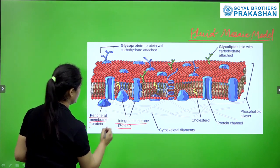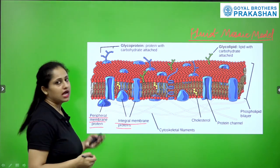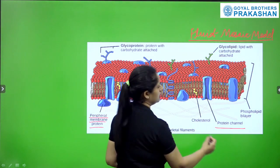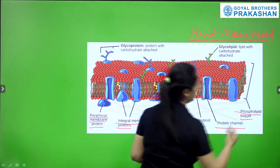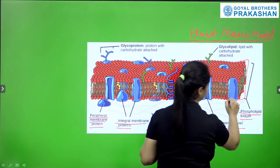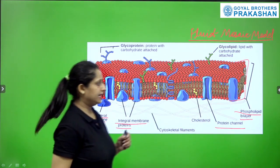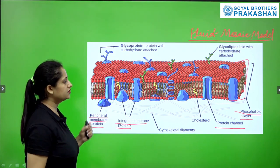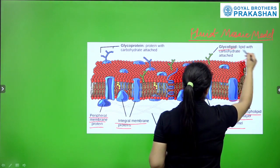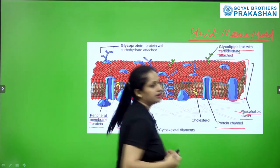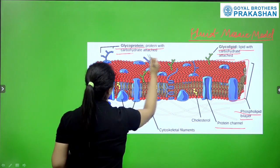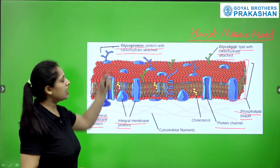Some peripheral membrane proteins are also present, which also help in transportation. Some protein channels are present. A phospholipid bilayer is present — that is, the membrane contains phospholipids, which means phosphorous plus fats. Glycolipid means lipid with carbohydrates attached. Glycoprotein is a protein when it is attached with carbohydrates.